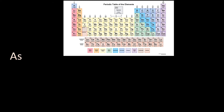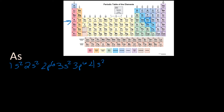Arsenic is hiding here — it has 33 electrons. It is in the fourth energy level. The first energy level is full, the second energy level is full, the third energy level is full. The fourth energy level is not full, but the s's are full and the d's are full. Then we get to the p's: 4s², 3d¹⁰, and 4p³.